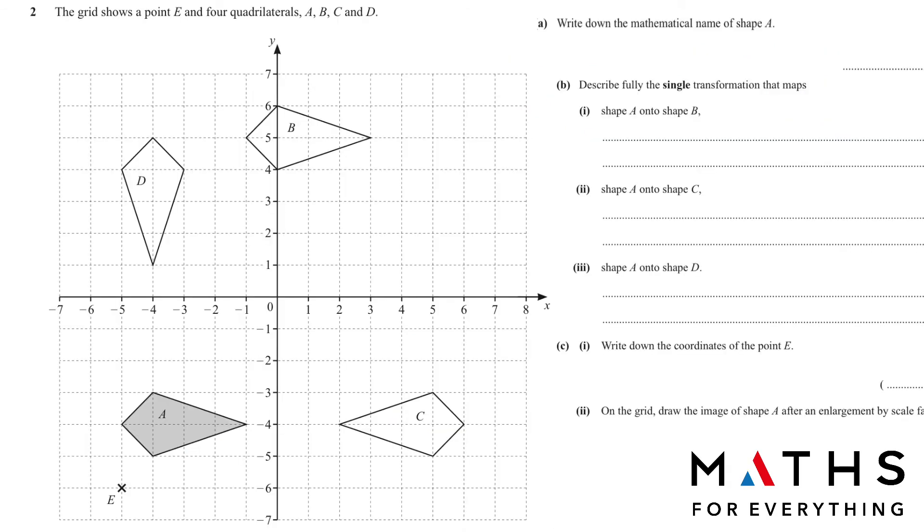Question number 2. The grid shows a point E and 4 quadrilaterals. A, B, C, D and the point A is here. Write down the mathematical name of shape A. Very easy. It's a kite.